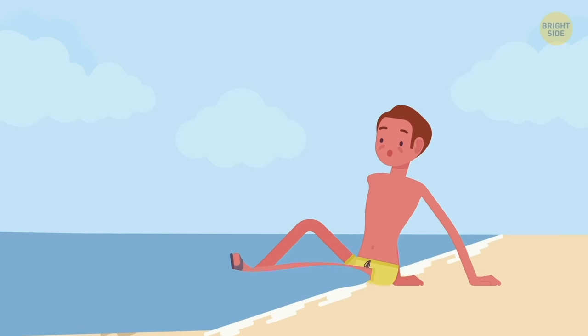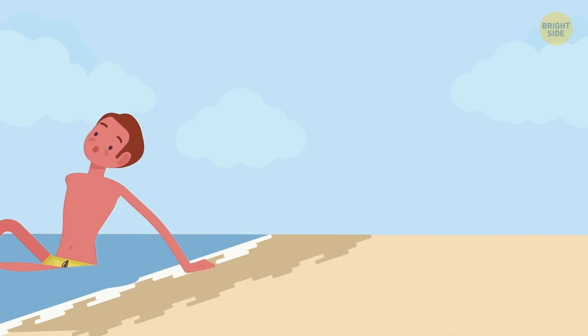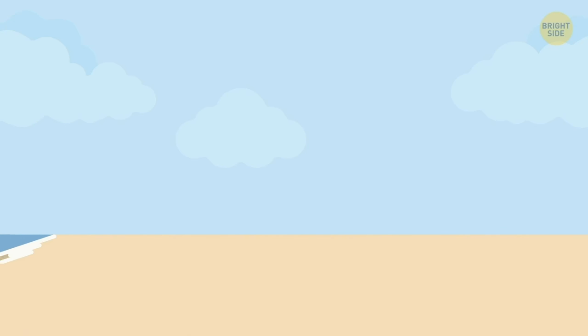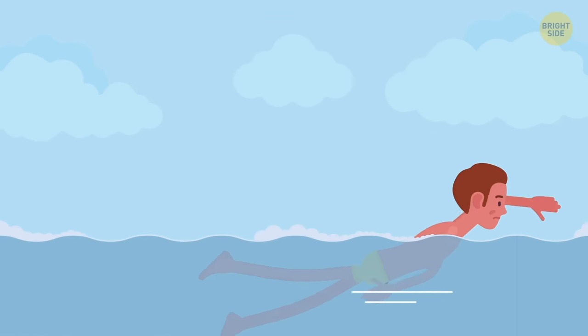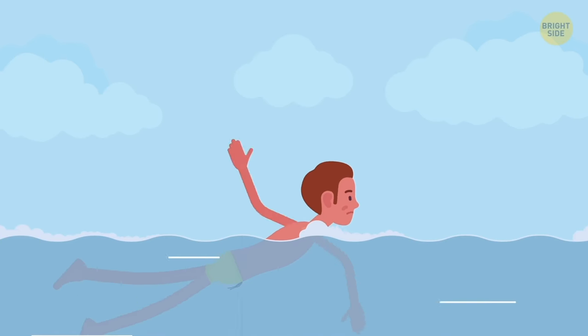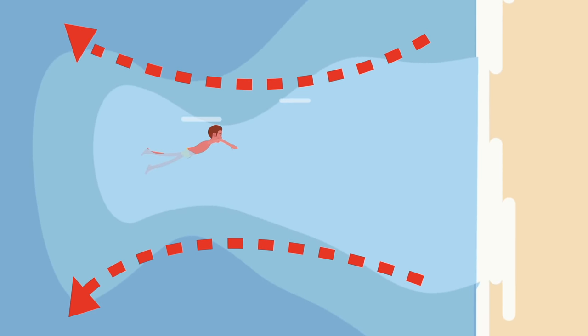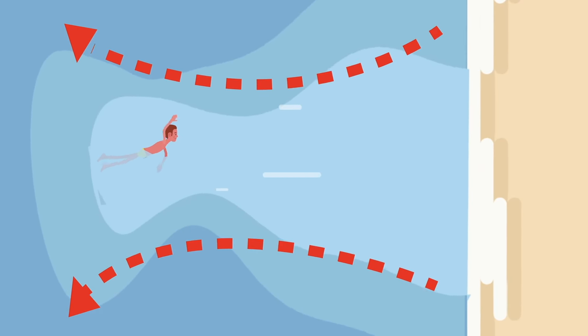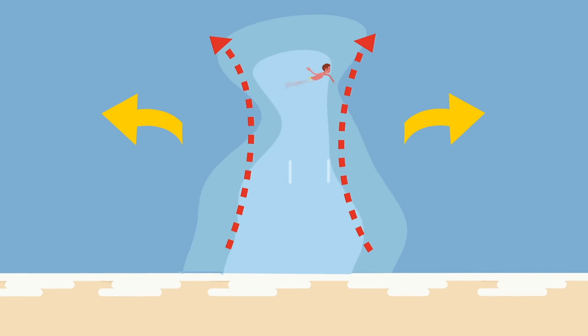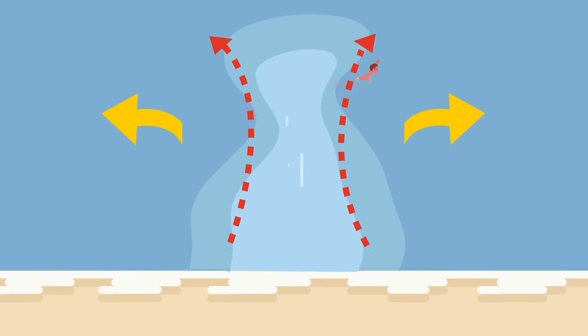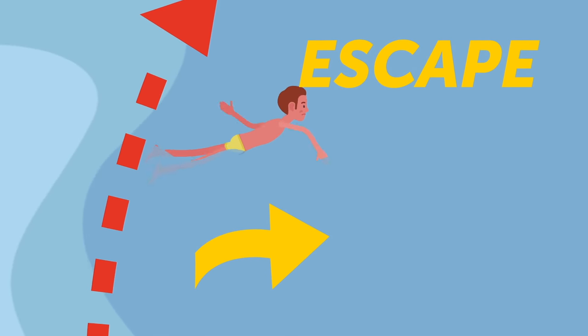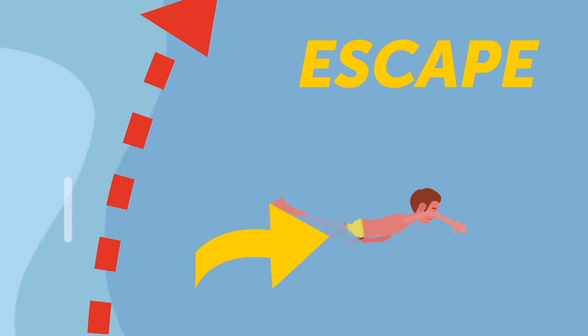Those currents are streams of water appearing near the shore and pulling away from it with huge force and speed. Swimming against a rip current is useless because they're too strong. But they're also quite narrow, so you can safely swim alongside the beach in any direction to get away. As soon as you feel like nothing is dragging you, you can swim towards the shore. Just do it at an angle.